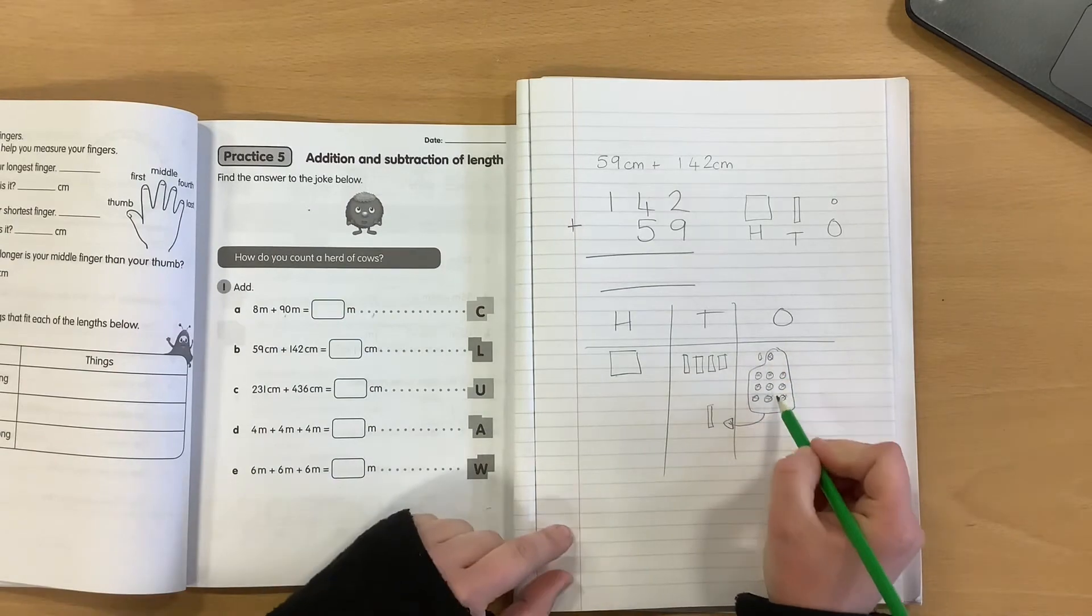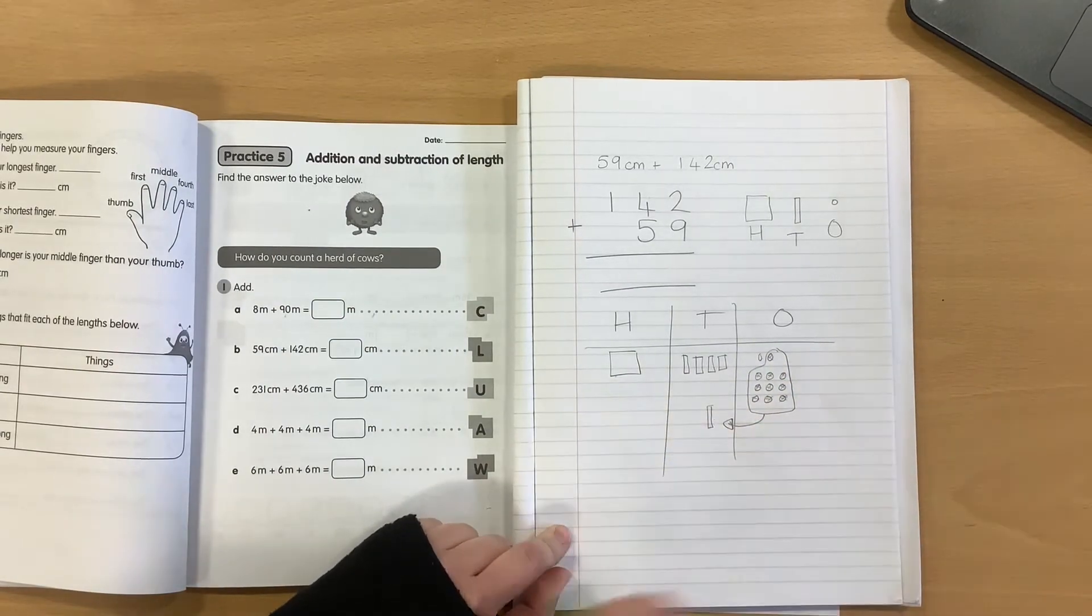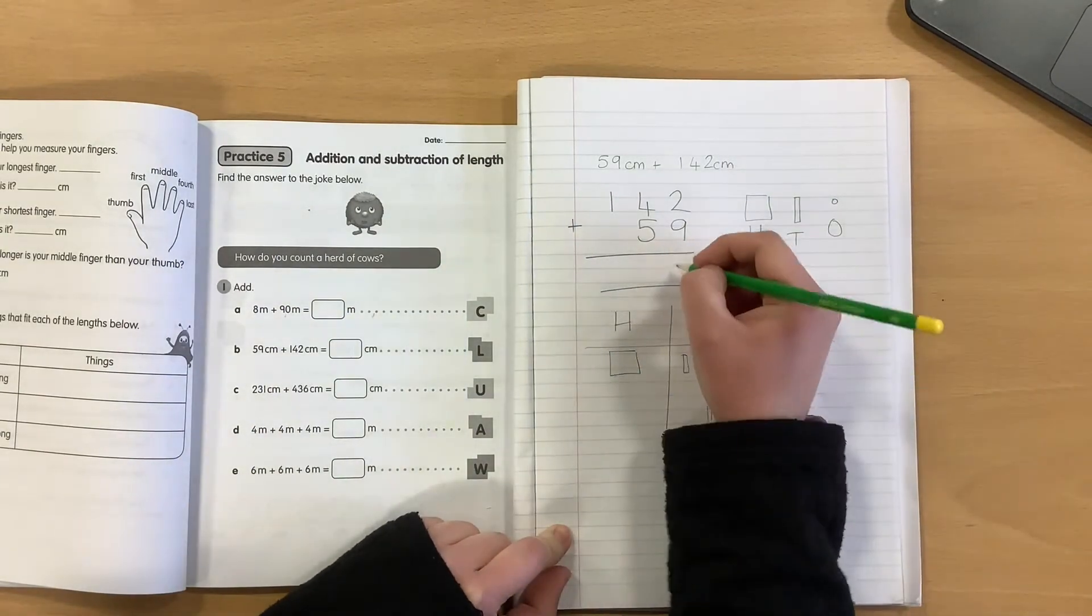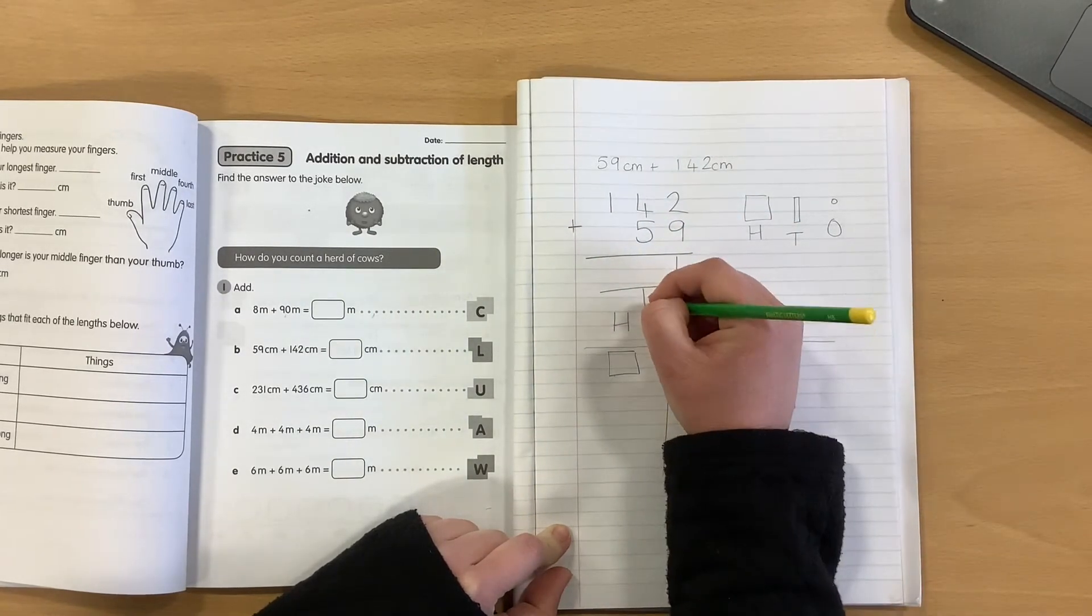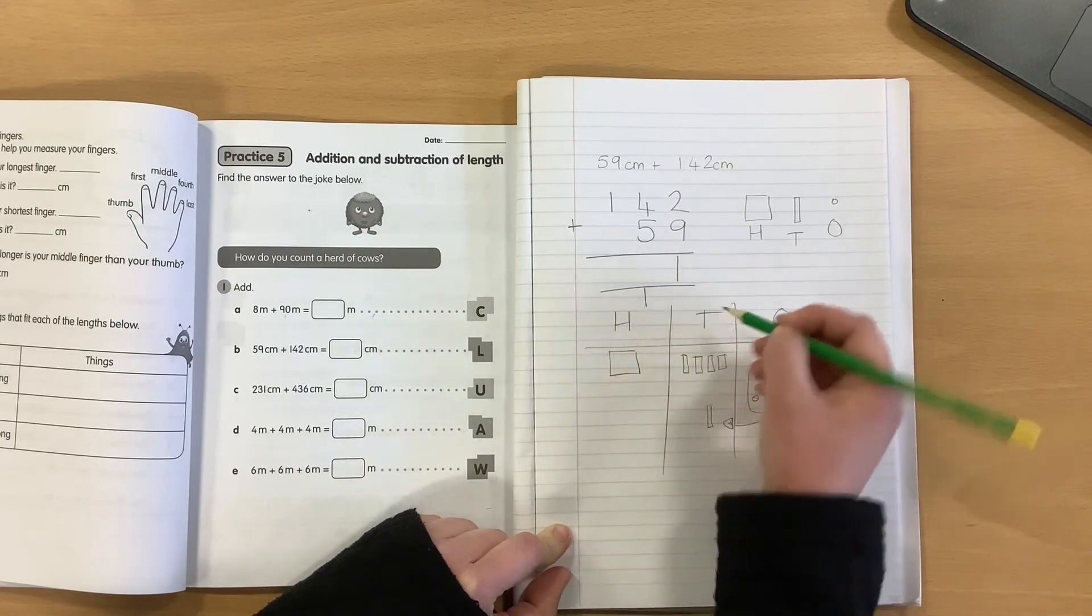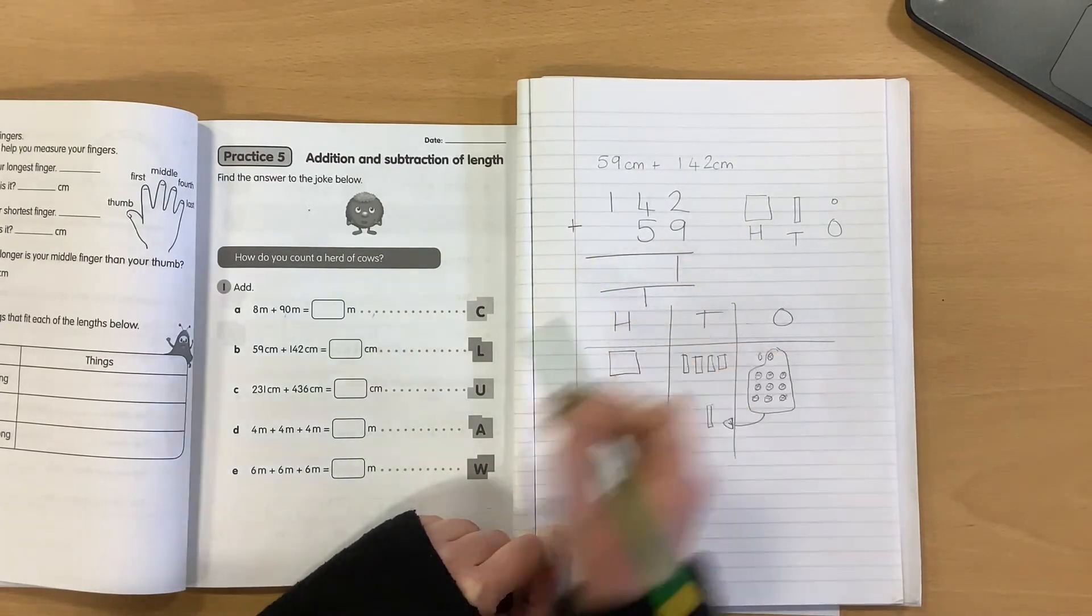So, I've regrouped my ten ones to become one ten. And I can represent that up here by saying I have one one left over, and I have one regrouped ten. I can just put it underneath my answer area.